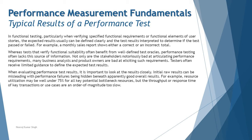When evaluating performance test results, it is very important to look at the results closely. Initial raw results can be misleading, with performance failures being hidden beneath apparently good overall results. For example, resource utilization may be well under 75% of all key potential bottleneck resources, but the throughput or response time of key transactions or use cases may be an order of magnitude too slow. So though your resources show below 75% utilization, which is acceptable, the response time is still higher. Just saying that limited resource was utilized during execution does not really mean that your response time is also low.